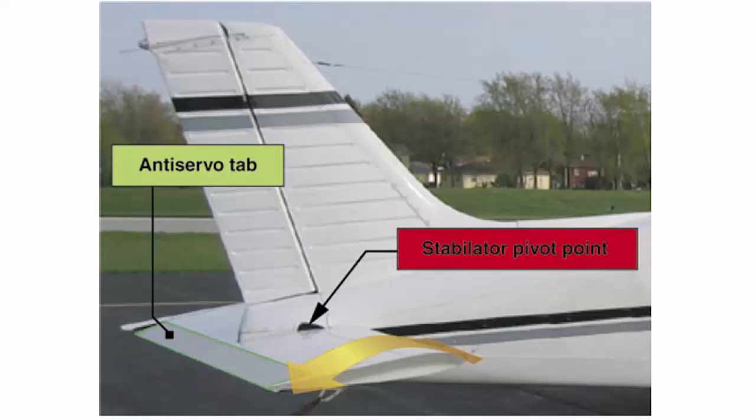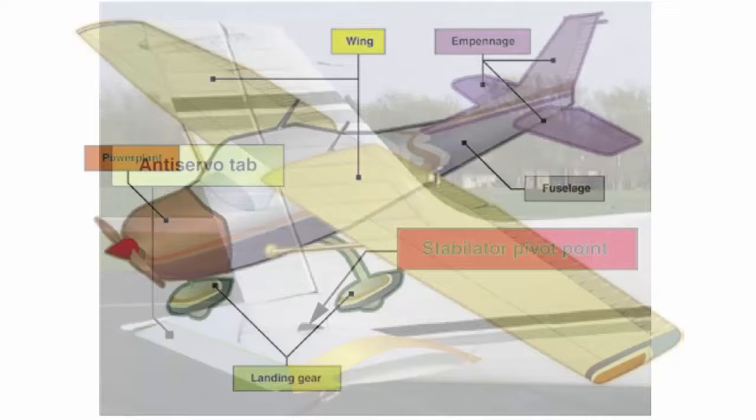A second type of empennage design does not require an elevator. Instead, it incorporates a one-piece horizontal stabilizer that pivots from a central hinge. This type of design is called a stabilator and is moved using the control wheel just as the elevator is moved. For example, when a pilot pulls back on the control wheel, the stabilator pivots so the trailing edge moves up, causing the nose of the airplane to move up. Instead of a trim tab, stabilators have an anti-servo tab extending across their trailing edge. The anti-servo tab moves in the same direction as the trailing edge of the stabilator, making it less sensitive, and also functions as a trim tab to relieve control pressures and maintain the stabilator in the desired position.